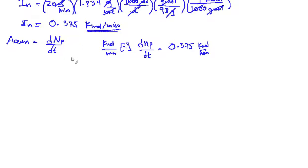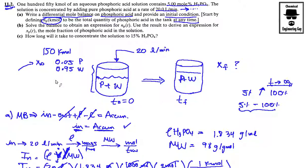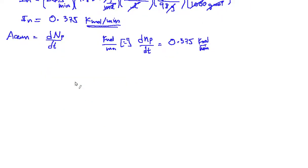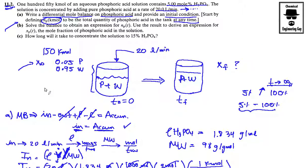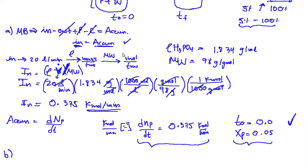They tell us we want to do this at any time. We calculate the initial condition — at time zero we have mole fraction xp equal to 5%, which is given data. So what we have is a differential equation with a boundary condition, so we could actually solve it. They don't ask us to solve it yet in letter A — they just want the differential equation and the boundary condition. We're going to solve it in letter B: solve the balance to obtain an expression for NP(T), then use the result to derive an expression for xp as a function of time.